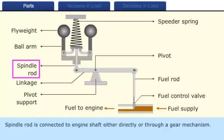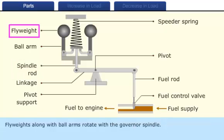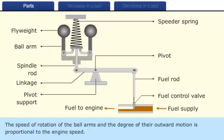Spindle rod is connected to engine shaft either directly or through a gear mechanism. Flyweights along with ball arms rotate with the governor's spindle. The speed of rotation of the ball arms and the degree of their outward motion is proportional to the engine speed.